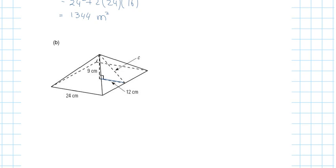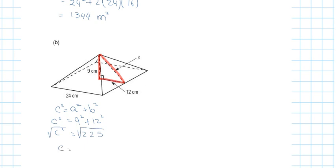Looking at this right triangle, I have two legs — the pyramid height and the half-base — and I'm solving for the hypotenuse C, which is the slanted height. So that's 9 squared plus 12 squared, which equals 225. Taking the square root gives me 15 centimeters. Now I have my slanted height.